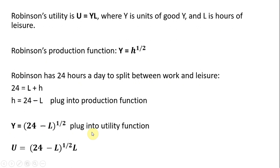And then the next step we'll do is plug this production function into the utility function where we see Y. We'll plug in 24 minus L raised to the 1 half power. So here we've got utility as simply a function of hours of leisure.